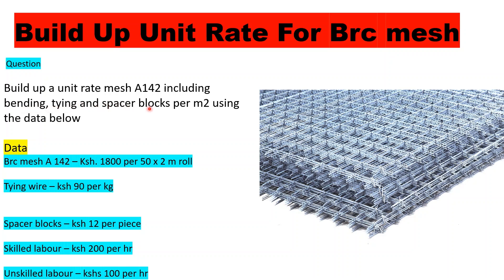We want to build a unit rate for BRC mesh including bending, tying wire, and spacer blocks per square meter. The BRC mesh is A142 at a price of 1,800 shillings per roll, and the roll size is 50 by 2 meters. Tying wire costs 90 shillings per kg, spacer blocks are 12 shillings per piece, skilled labor is 200 shillings per hour, and unskilled labor is 100 shillings per hour.